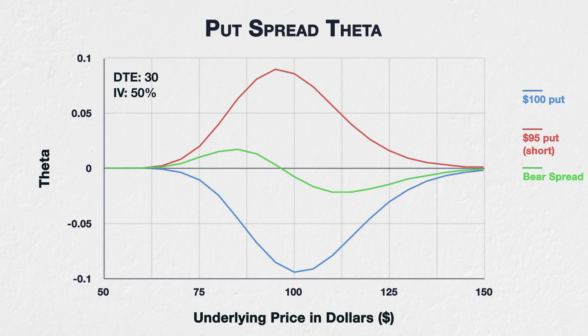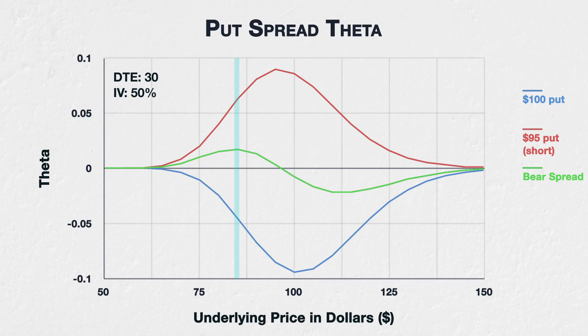Whether the theta is positive or negative for the spread depends on where the underlying price is in relation to the strike prices. Starting on the far left with the underlying price down at $50 to $60, both options are so far in the money that they both have hardly any extrinsic value to lose. Theta is therefore very small for both individual options and also for the spread as a whole. Moving to the right to the $65 to $95 area, both options are still in the money but do have some extrinsic value.